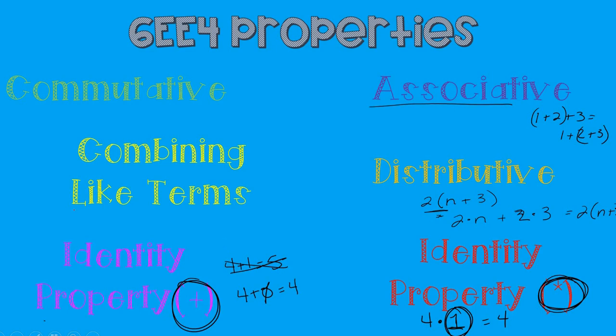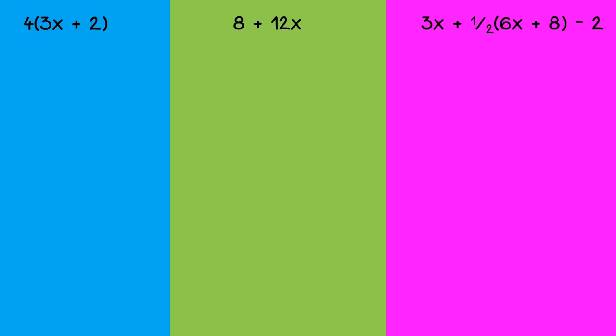And then again, combining like terms. Keeping in mind like terms, they have to have the same variable and the same exponent. So now what that means is if I have 4x plus 3x squared plus 2x, 4x and 2x are like terms and I can combine them, I can add them, but I cannot add them to the 3x squared because it is not a like term.